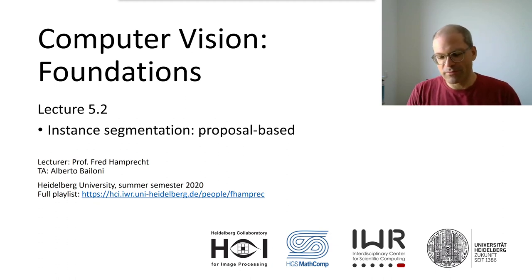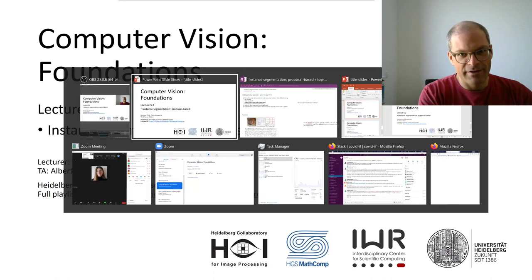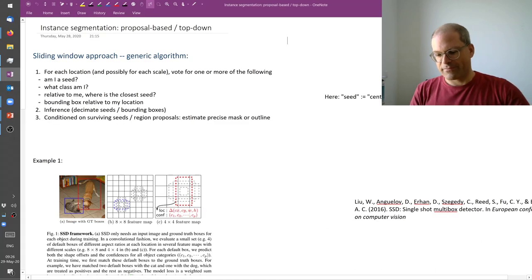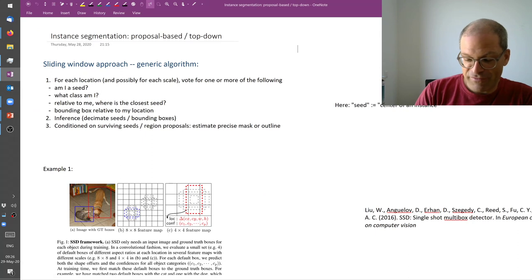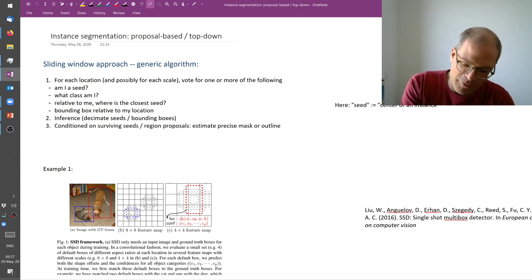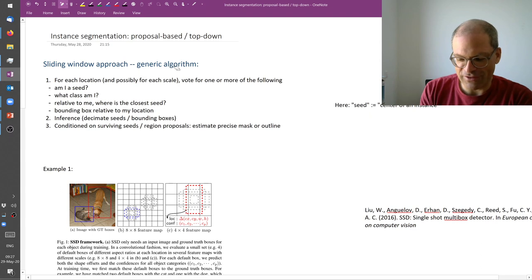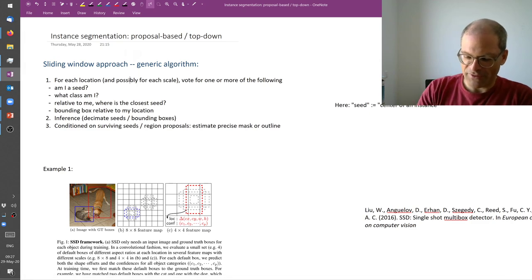All right, so here we talk about the proposal-based class of instance segmentation algorithms. It's a broad field, there are very many approaches that do more or less different things. I have here broadly summarized them in a generic algorithm and surely I'm not doing justice to each subtle variation, but I think by and large they can be summarized as follows.